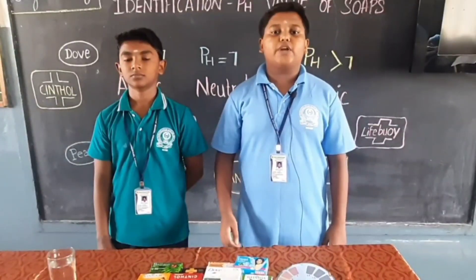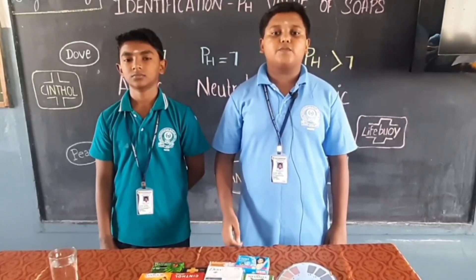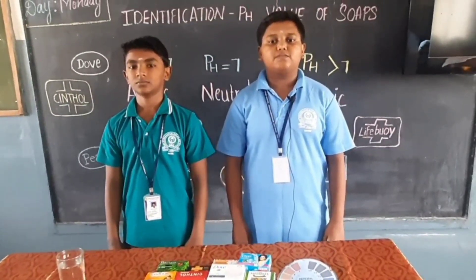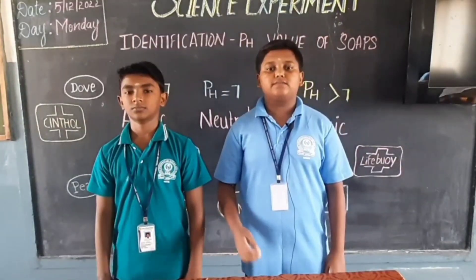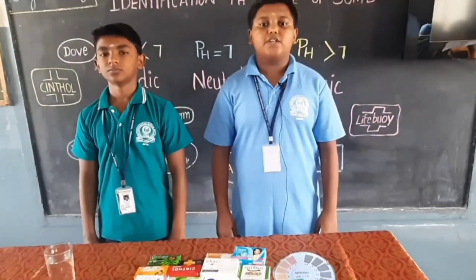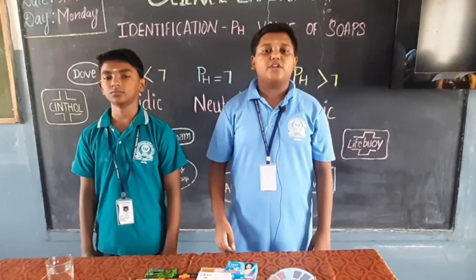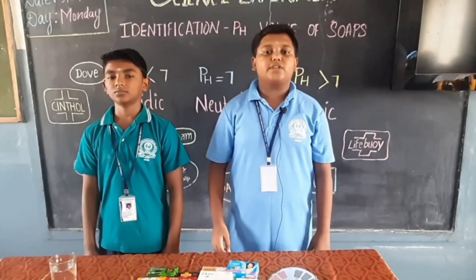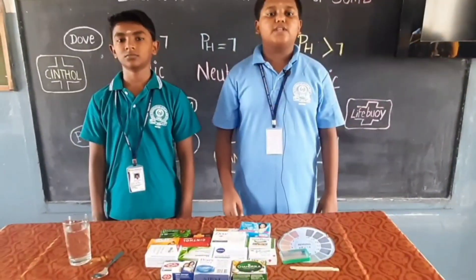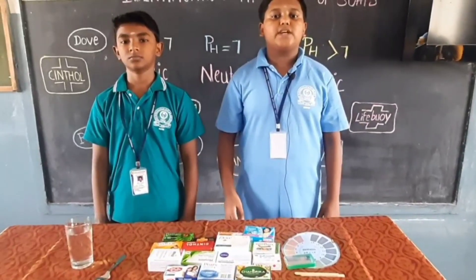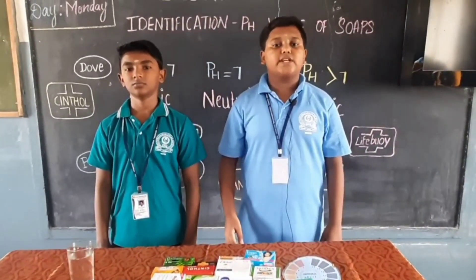Now we are going to find the pH value of 15 types of soap. What is called pH value? The full form of pH is potential of hydrogen. pH is measured on a scale of 0 to 14. On this scale, a pH value of 7 is neutral, which is neither acidic nor basic. A pH value less than 7 means it is acidic. A pH value more than 7 means it is basic.